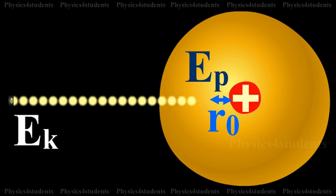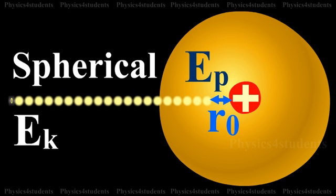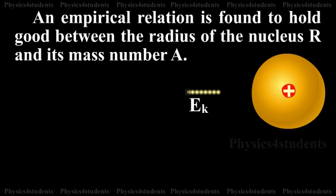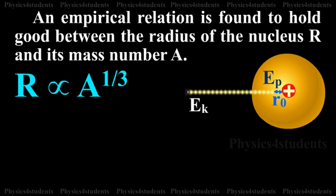If the nucleus is assumed to be spherical, an empirical relation is found to hold good between the radius of the nucleus R and its mass number A. It is given by R directly proportional to A raised to 1 by 3.